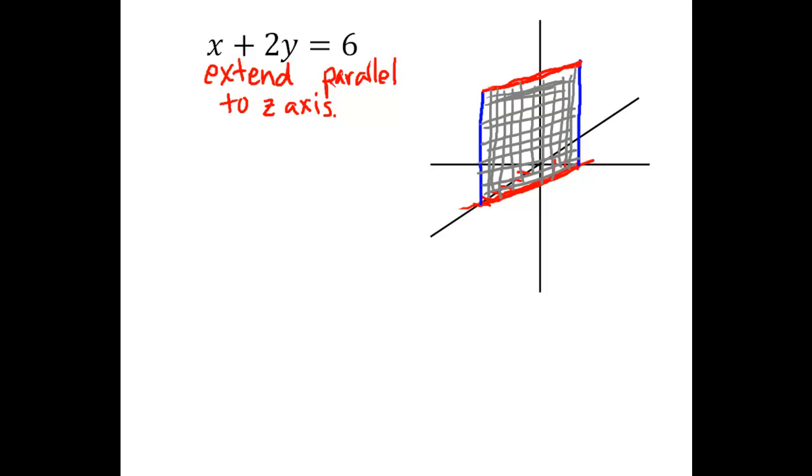And of course that plane extends down below the first octant and extends back and to the right and forward and to the left as well, and further up as well. But this gives us at least a portion of the plane so we can see how it's oriented.